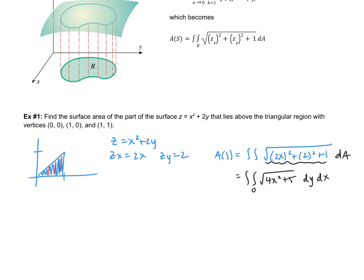Looking at our bounds, we're going from 0 to x because of this line y = x, and then our x limits are from 0 to 1. So now I'm ready to integrate. I'm going to end up with √(4x² + 5) times y, and I'm evaluating from y = 0 to y = x.